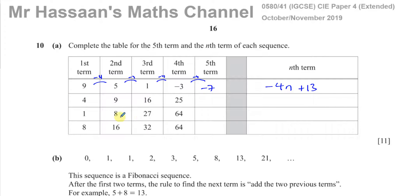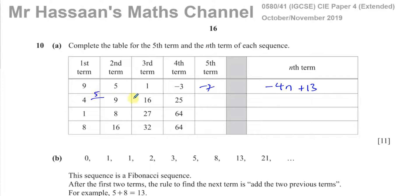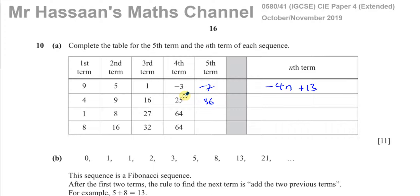The next sequence is a different type — it doesn't change by a constant amount every time. This one is going up by 5, then up by 7, then up by 9, so it's going to go up by 11 next, giving 36. Another way to think about it is that these numbers are all square numbers: 4, 9, 16, 25, 36 are all square numbers.